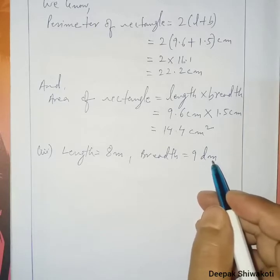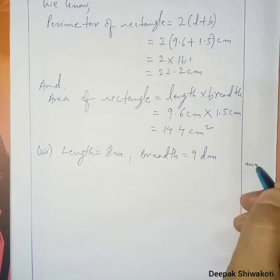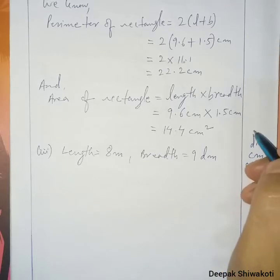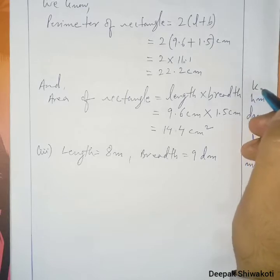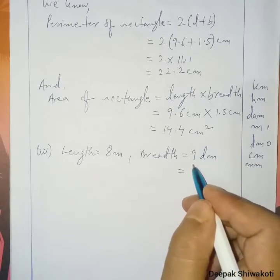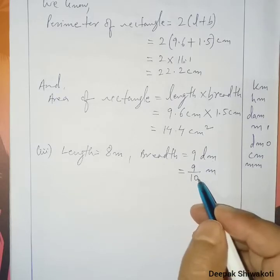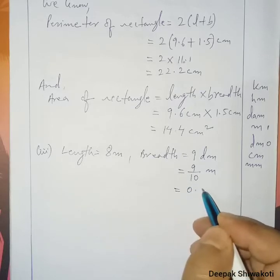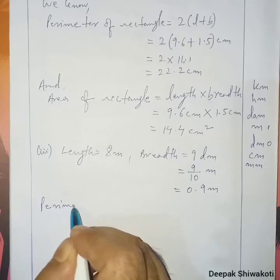Breadth is 9 decimeter. We will change it into meter. The unit scale goes: millimeter, centimeter, decimeter, meter, decameter, hectometer, kilometer. To convert decimeter to meter, we divide by 10. So 9 divided by 10 gives us 0.9 meter. Now both units are the same, so it is easy to work.